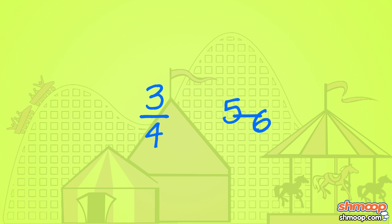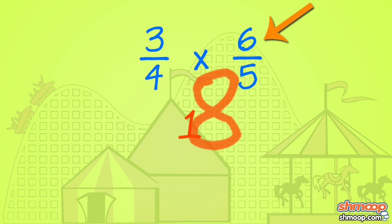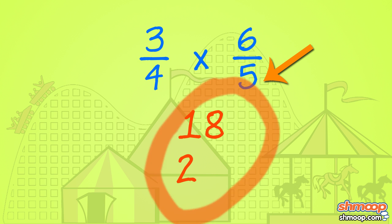After we've learned the reciprocal of the second fraction, we can multiply the two together. 3 times 6 is 18, and 4 times 5 is 20, giving us 18 twentieths.